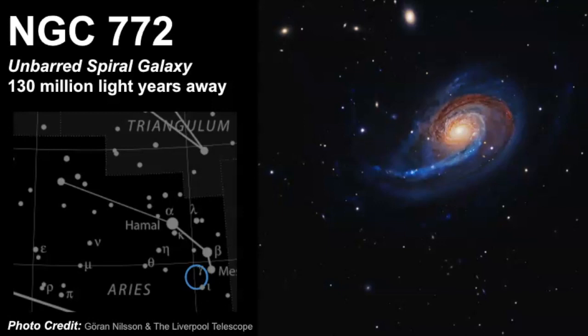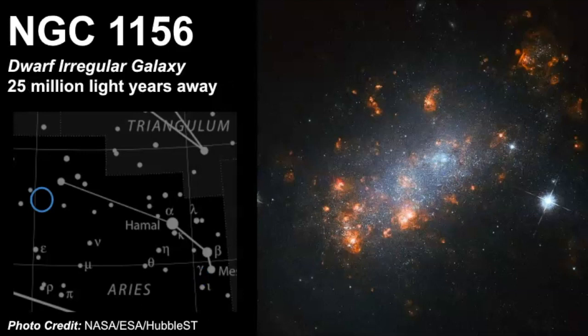Our next galaxy is called NGC 1156 and this is a dwarf irregular galaxy and this one's much closer than the last galaxy we took a look at. It's estimated to be 25 million light years away and it's classified as an irregular galaxy because it doesn't really have a shape to it.